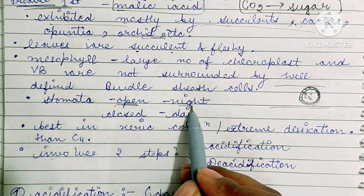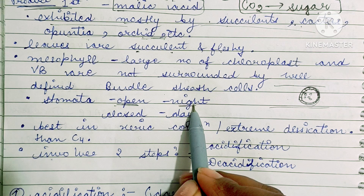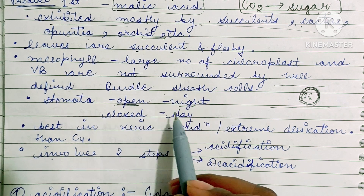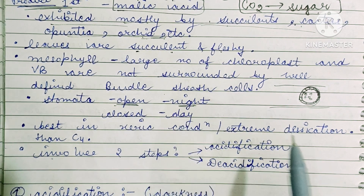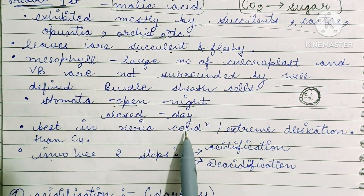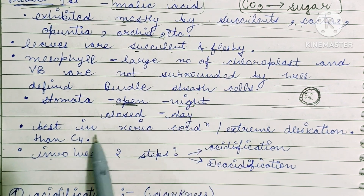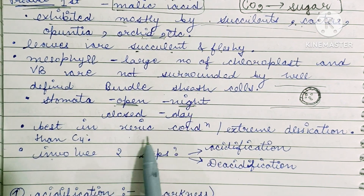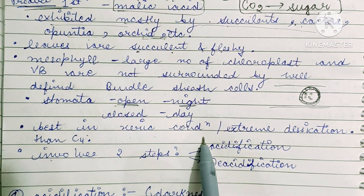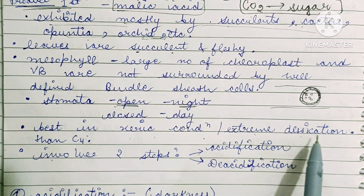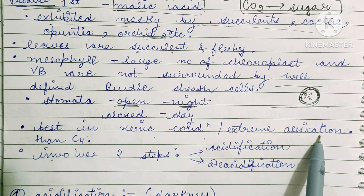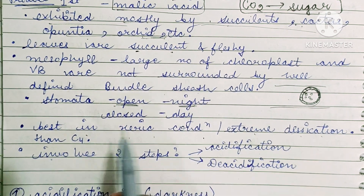The stomata are open at night and closed during the daytime. These CAM plants are best suited to xeric conditions, where there is extreme desiccation — they can manage extreme desiccation.